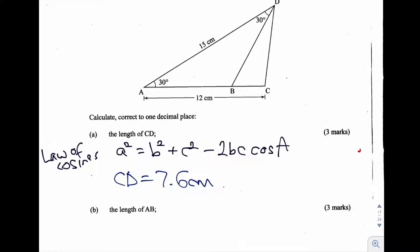Now we're on to question B of question 20 of the 2015 KCSE Maths Paper 1, section 2. This question asks us to calculate, correct to one decimal place, the length of AB.